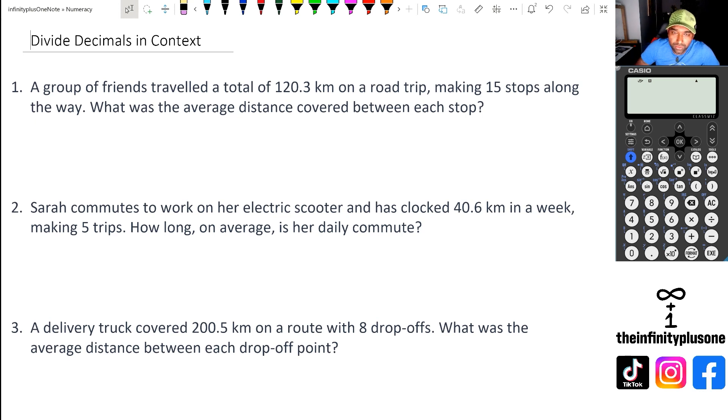So we got 120.3 divided by 15. When we do this, we're going to 120.3 divided by 15, the number of stops. So we're looking at an average of 8.02 kilometers.